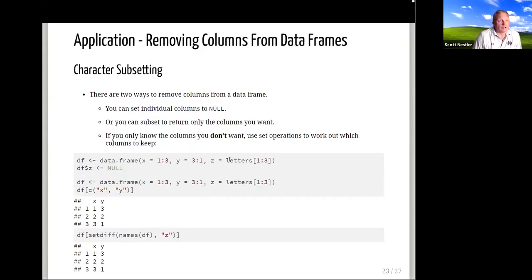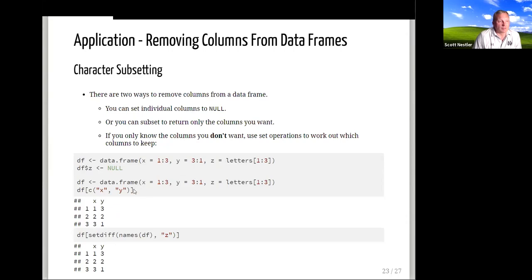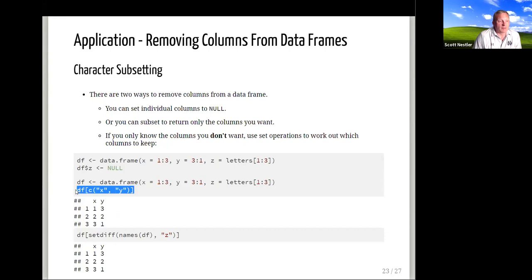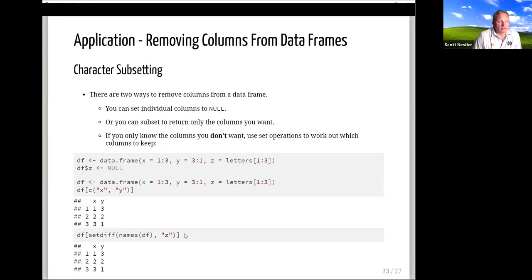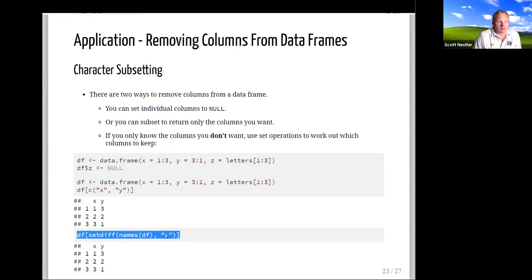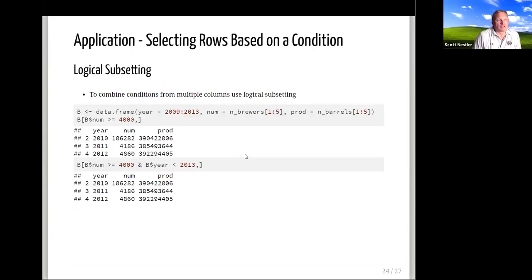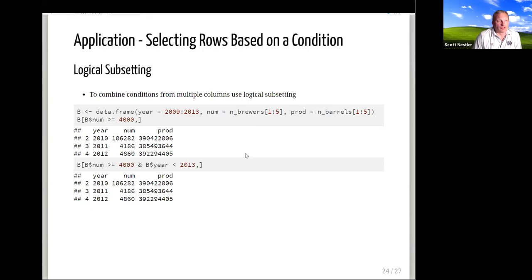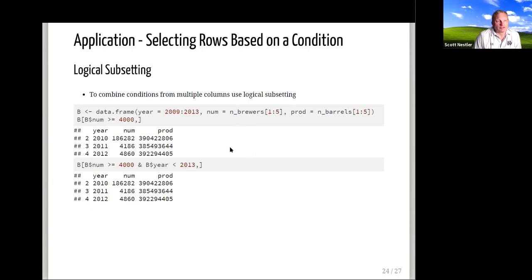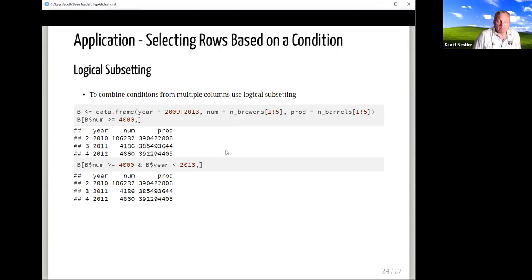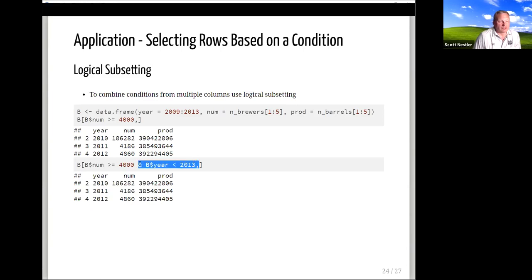We can remove columns from data frames in a couple of ways: either select the ones you want to keep, or use setdiff() to keep all columns except the one you don't want. We can also select rows based on a condition — one of the more useful applications. It doesn't have to be from just one variable: we can say give me all rows where there were at least 4,000 producers, or combine conditions like at least 4,000 producers AND year less than 2013.